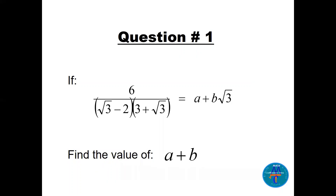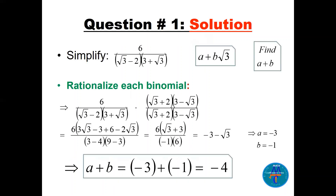Question 1: 6 over something equals a plus b times square root of 3. The idea here is to rationalize the denominator. We have two brackets, so we can rationalize each one. For the bracket with square root of 3 minus 2, the conjugate will be square root of 3 plus 2, placed up and down. Then 3 plus square root of 3 — becomes a minus.